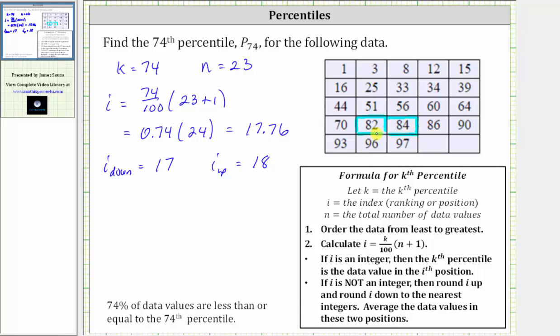Which means the 74th percentile is the average of these two data values. Which means P sub 74, the 74th percentile, is equal to the quantity 82 plus 84 divided by two, which is equal to 83.